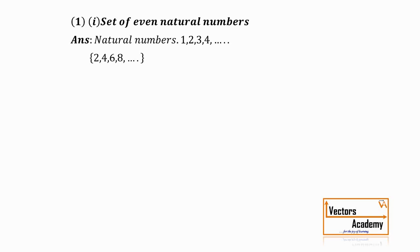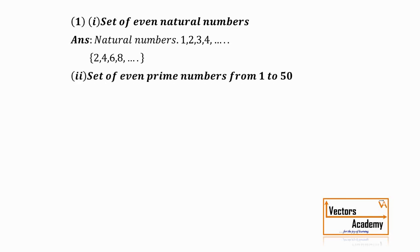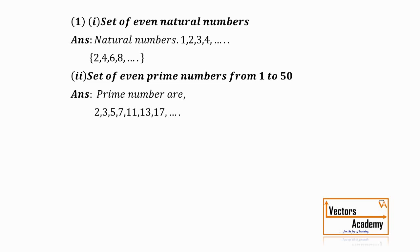The set is represented by keeping all these elements inside the curly bracket. Now the second statement: a set of even prime numbers from 1 to 50. Prime numbers are those numbers which are only divisible by 1 or themselves — they are not divisible by any other number. The prime numbers are 2, 3, 5, 7, 11, and so on. Out of all the prime numbers, there is just one that is even — that is 2. Hence our set will contain just one element, that is 2.